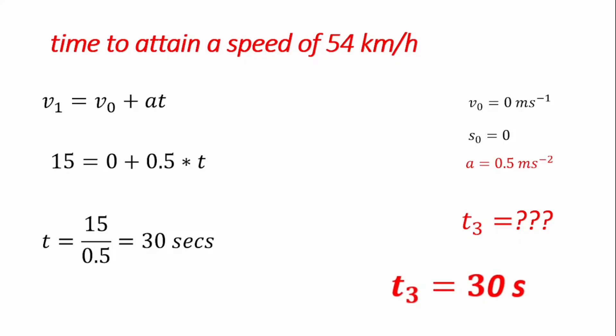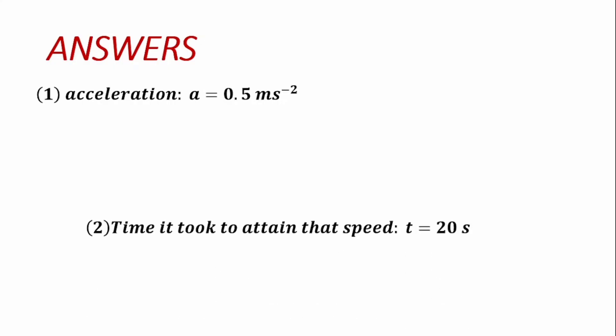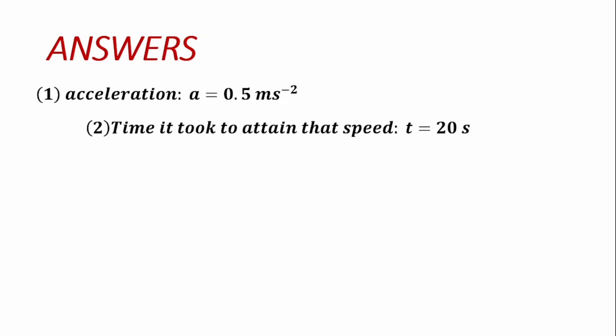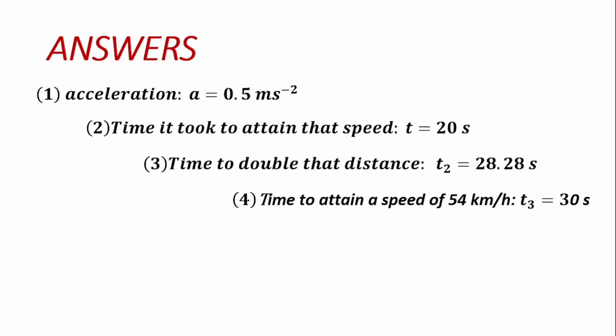Therefore, 30 seconds is the time required to attain a speed of 54 km per hour. To summarize the answers: we calculated the acceleration of the vehicle to be 0.5 m/s²; the time to attain the speed of 36 km per hour is T equals 20 seconds; the time T2 to double the distance is 28.28 seconds; and the time to attain a speed of 54 km per hour is 30 seconds.